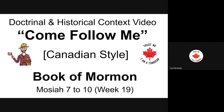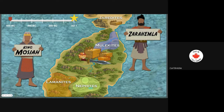Welcome to Come Follow Me Canadian Style. We're in the Book of Mormon. Today we're covering Mosiah 7 through 10. This is week 19. I'm going to show you a few graphics here to help you through this complex time. We're going to do some flashbacks. Mormon has compiled his book to allow us to learn different things for specific reasons, which we'll talk about later.